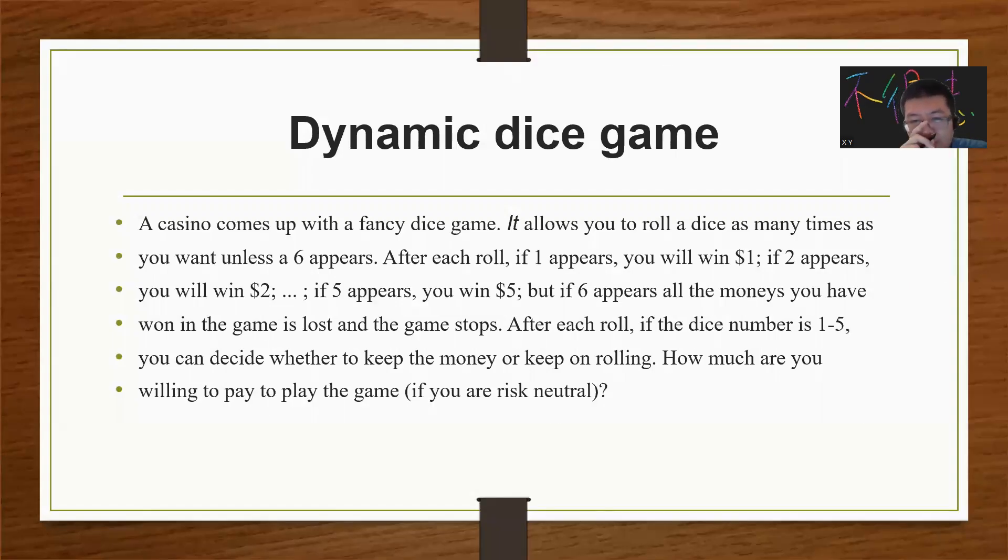Hey, what's up guys. Let's solve this interview problem called Dynamic Dice Game. A casino comes with a fancy dice game. You can roll the dice as many times as you want unless a 6 appears. After each roll, if 1 appears you win $1, if 2 appears you win $2, and so on up to 5.